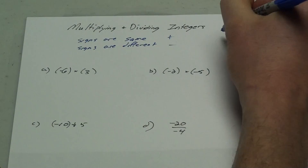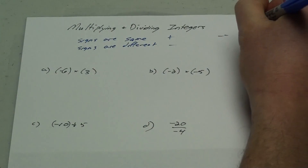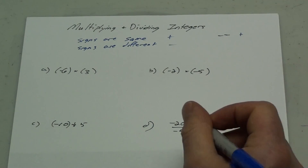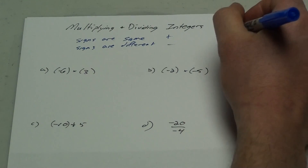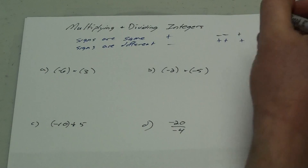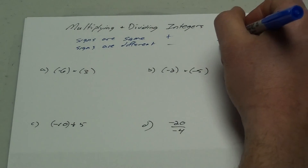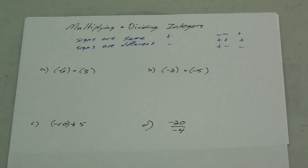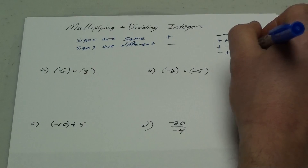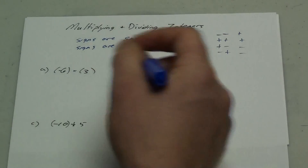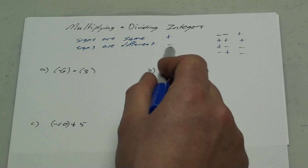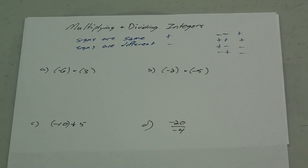So because of that, if you have two negatives — negative and negative — you'll get a positive. If you have a positive and a positive, you'll get a positive answer. If you have a positive and a negative, you'll get a negative answer. And if you have a negative and a positive, you'll get a negative answer. If the signs are the same, your answer is positive. If the signs are different, your answer is negative.